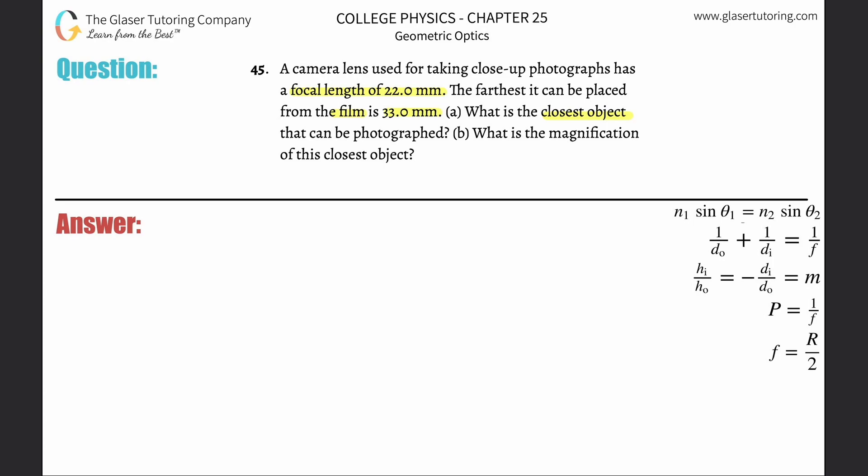So we're told focal length and image distance, because the image is projected on the film, and we need to find the object distance. We use the thin lens equation for lenses: one over do (the object distance) plus one over the image distance equals one over the focal length of the lens.